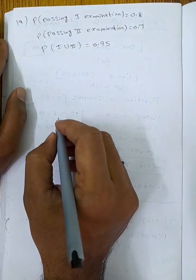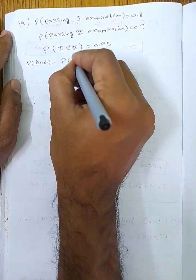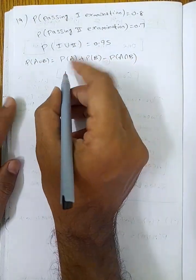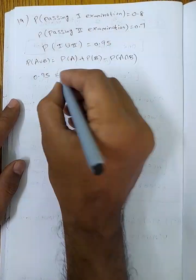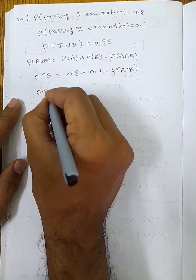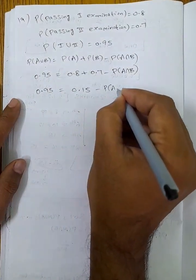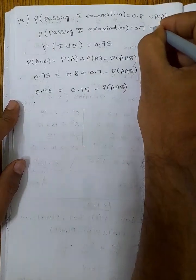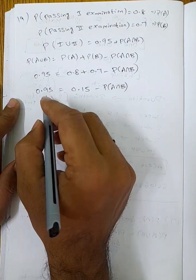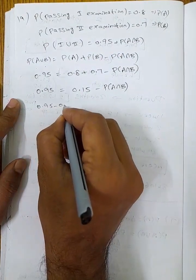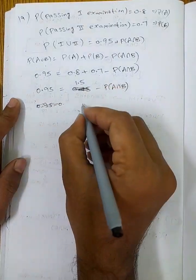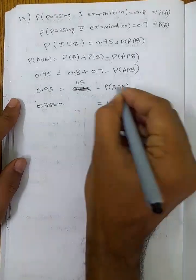P of A union B is equal to P of A plus P of B minus P of A intersection B. So, first union second: 0.95 = P of A (0.8) plus P of B (0.7) minus P of A intersection B. So, 0.8 plus 0.7 equals 1.5. So, 1.5 minus 0.95 gives P of A intersection B.